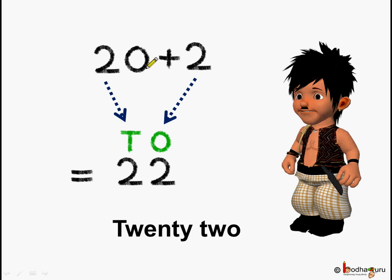So let's put the digits at their correct places. Two ones, so two comes at the ones place. Two tens, so two comes at the tens place. What do we get? 22. So 22 is the standard form of 20 plus 2. Understood?